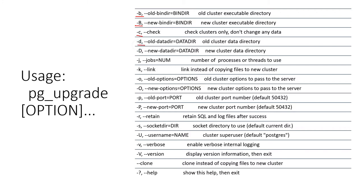-d represents the data directory of the older cluster. Other important parameters include -p, which represents the port number of the older cluster, and -P for the port number of the new cluster. You can also mention a username if there is a user other than postgres. -v is used for verbose output so you can see the proceedings on the screen.